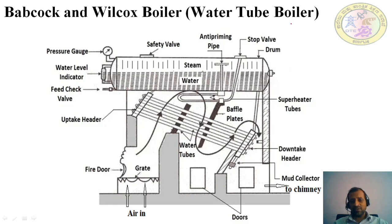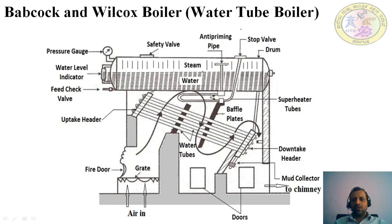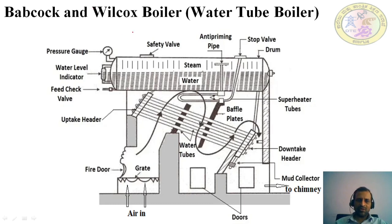In the previous session we have seen the fire tube boiler, and in this session we will see the water tube boiler. In a fire tube boiler, the fire is inside the tube and water is circulating around those tubes. In a water tube boiler, water is inside the tube and fire is around the tube. The example for the water tube boiler is the Babcock and Wilcox boiler.